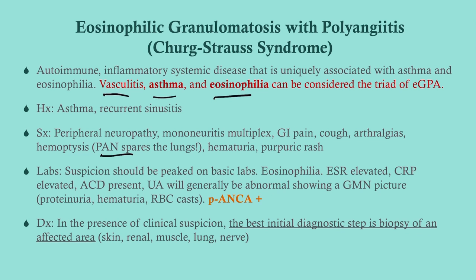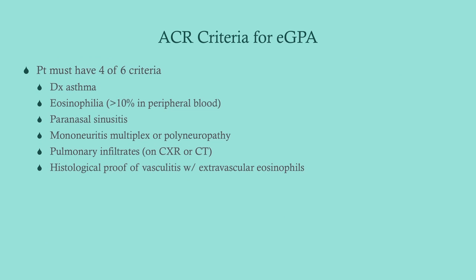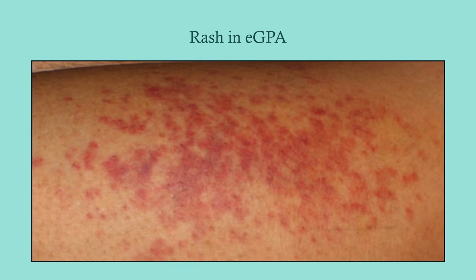Lab abnormalities don't really distinguish EGPA from other vasculitides, but the key is that p-ANCA will be positive — remember, with Wegener's it's c-ANCA, with EGPA it's p-ANCA. In the presence of clinical suspicion, the best initial diagnostic step after labs is a biopsy of an affected area — if the patient has a rash, you can simply biopsy the rash.